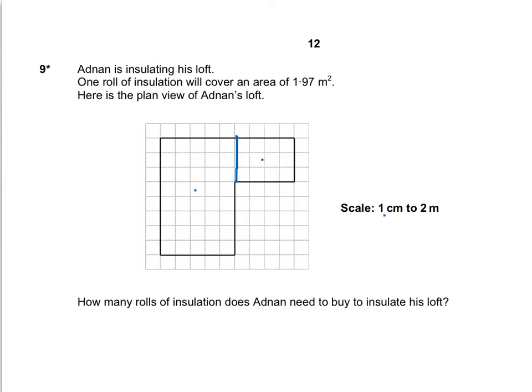Notice it says a scale of 1 centimetre to 2 metres, so every 1 centimetre on here is going to be 2 metres. So this here is going to be 2 centimetres, which will now be 4 metres. And this here is 1.5 centimetres, so that will now be 3 metres. On the other side, we've got 2.5 centimetres, which will now be 5 metres. And we've got 4 centimetres, which now becomes 8 metres.